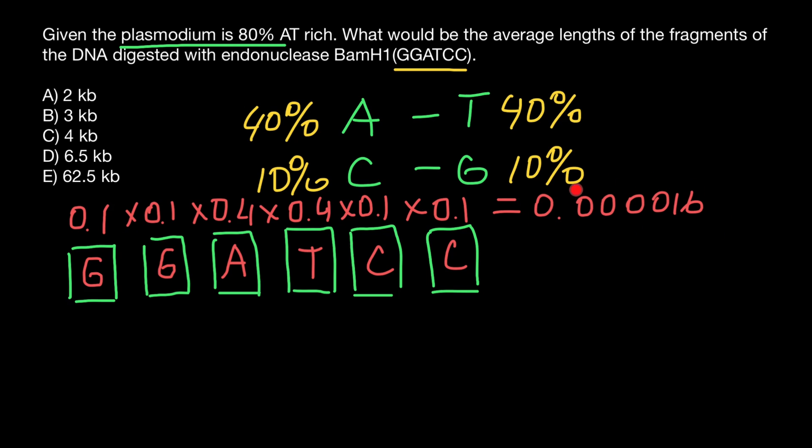But this is not going to be our answer. We just found the probability that if we take random six positions in this double-stranded DNA, this is going to be exactly this sequence. Our question is about the average length of the fragments which this endonuclease would cut whenever it finds such a sequence.